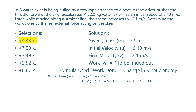Question number 8. A water skier is being pulled by a tow rope attached to a boat. As the driver pushes the throttle forward, the skier accelerates. A 72 kilogram water skier has an initial speed of 5.10 meters per second, and later, while moving in a straight line, the speed increases to 12.1 meters per second. Determine the work done by the net external force acting on the skier. We use the work-energy theorem: work done equals the change in kinetic energy, which is one-half m times v-final squared minus v-initial squared.